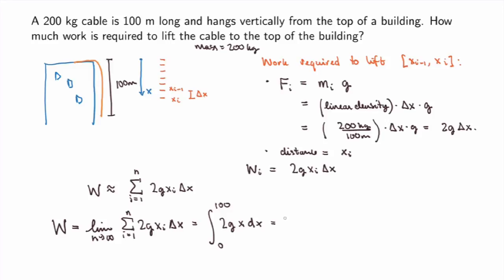Using the fundamental theorem of calculus, 2g is a constant so I pull it out. The antiderivative of x is x²/2, evaluated between 0 and 100. The 2's cancel, giving g times 100², which is 10,000g. Replacing g by 9.8 and reintroducing units gives the total work in newton-meters. Here the distance was variable — it depended on where you are on the cable — but we rewrote the work as a definite integral and used the fundamental theorem of calculus to calculate it.